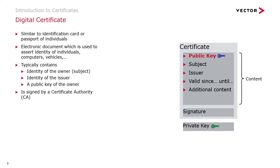A certificate has a defined structure that typically contains the identity of the owner — also called the subject — the identity of the issuer, and the public key of the owner. It is signed by a so-called certificate authority.